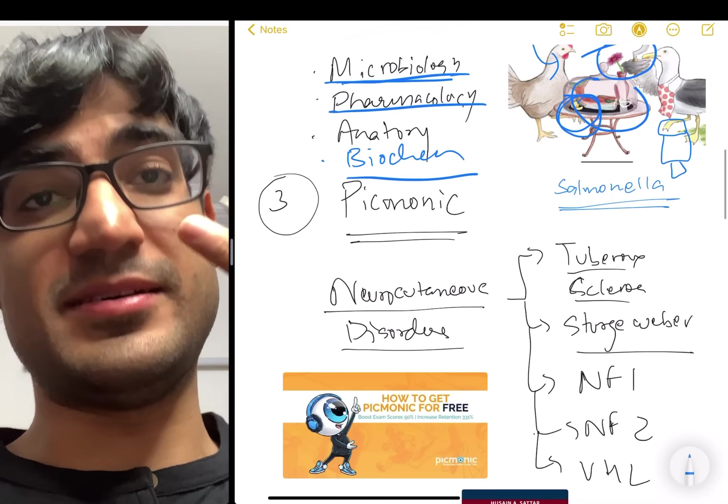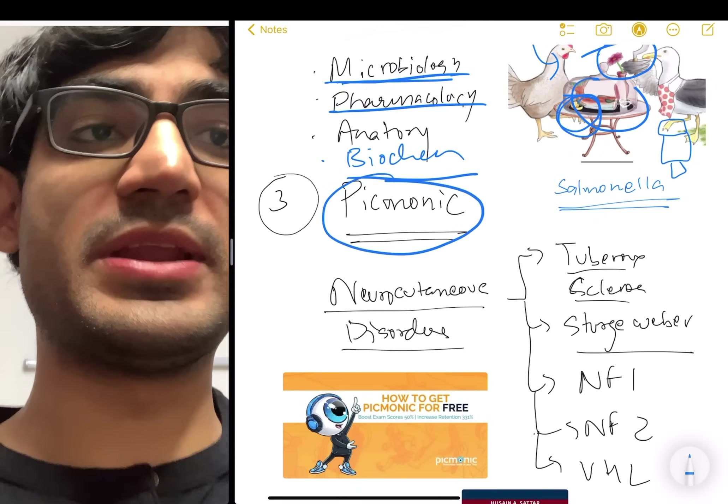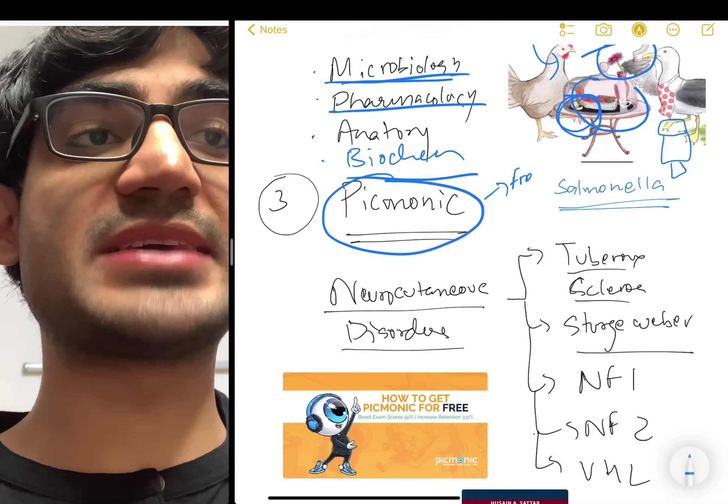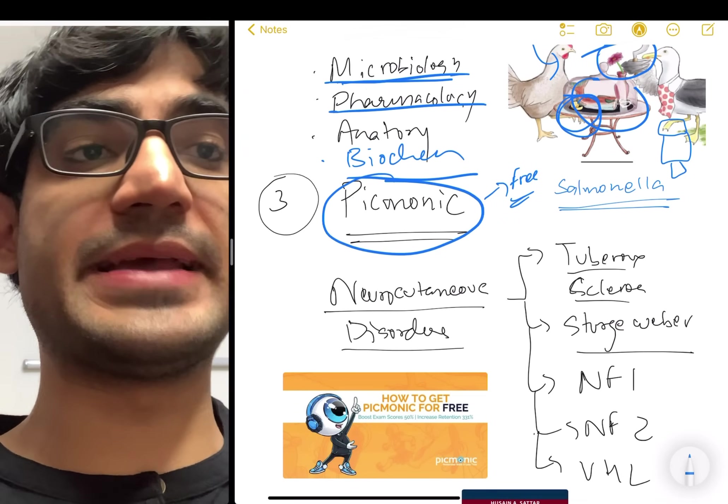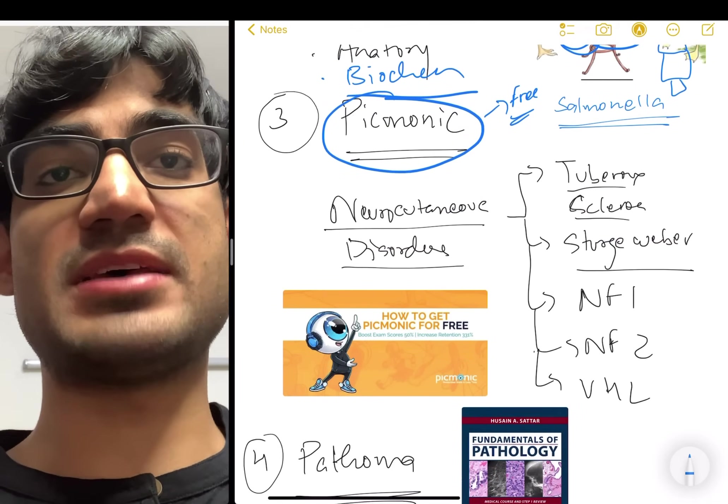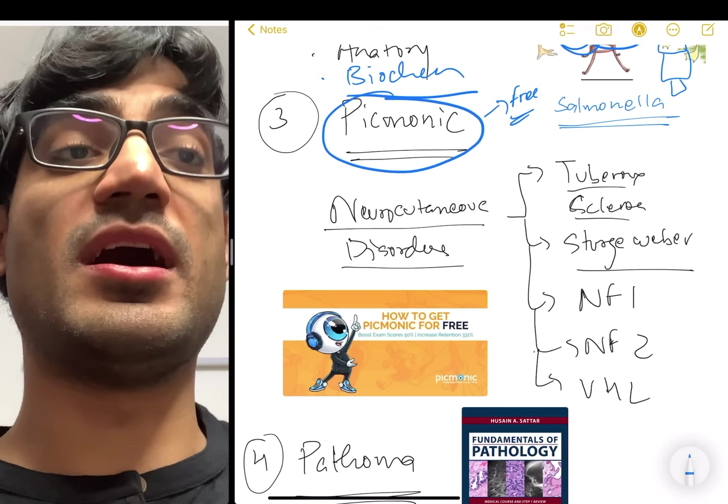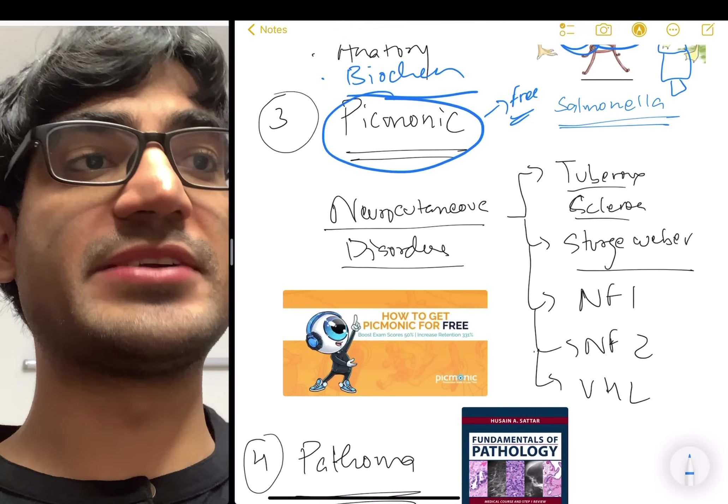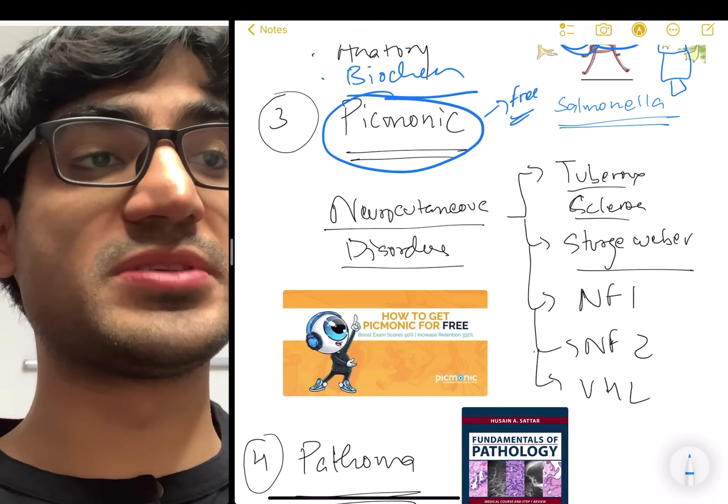The second visual mnemonics I would recommend is Picmonic. Now this is free. Remember Sketchy is paid, but Picmonic itself is free. And the videos I would recommend for Picmonic are for especially neurocutaneous disorders, like tuberous sclerosis, Sturge-Weber, neurofibromatosis one, two, and Von Hippel-Lindau.